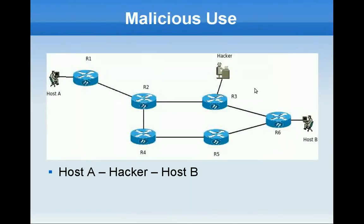Let's now see how hackers can use source routing to spoof IP addresses. First, let's assume that host B only allows host A to access a certain resource. If the hacker uses A's IP address to access that resource, all replies from host B would go to host A. However, if the hacker uses source routing and uses for example this route — host A, hacker, host B — host B would reply and send all the packets to the hacker. So the packets would go from the hacker to host B, back to the hacker and to host A. Naturally, the hacker can filter packets going to host A, limiting packets from the hacker to host B and back to the hacker.